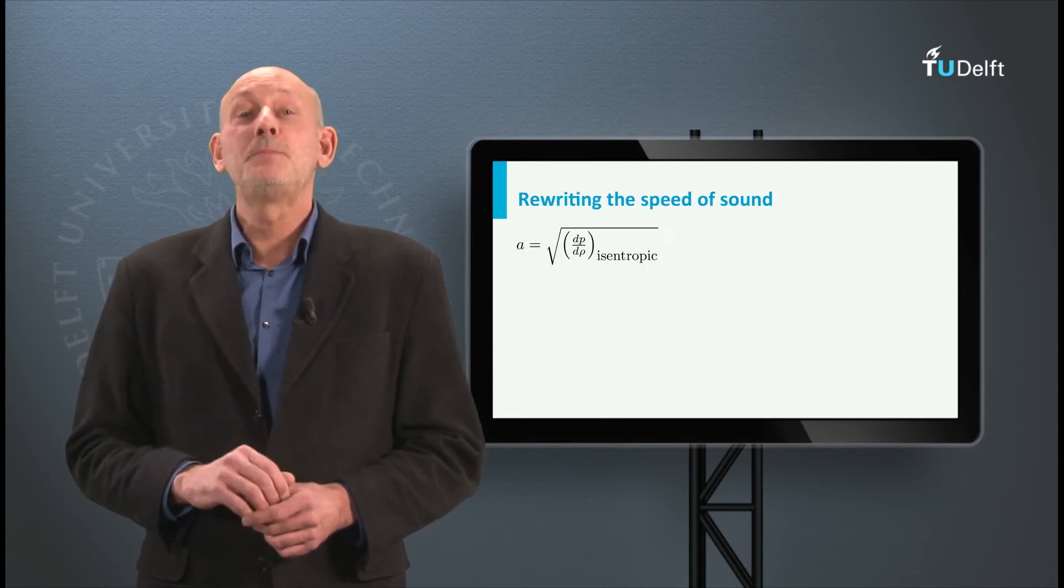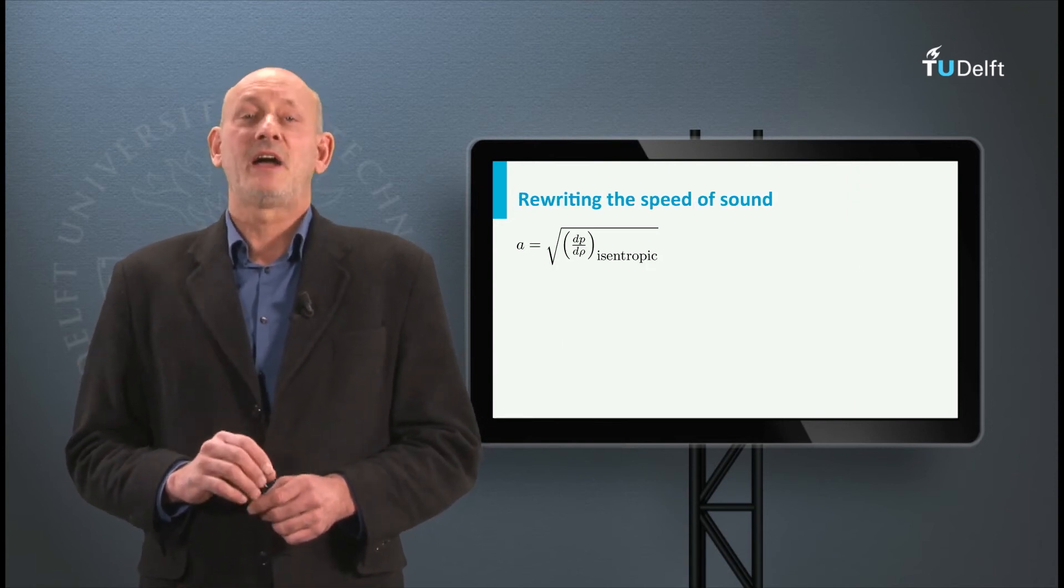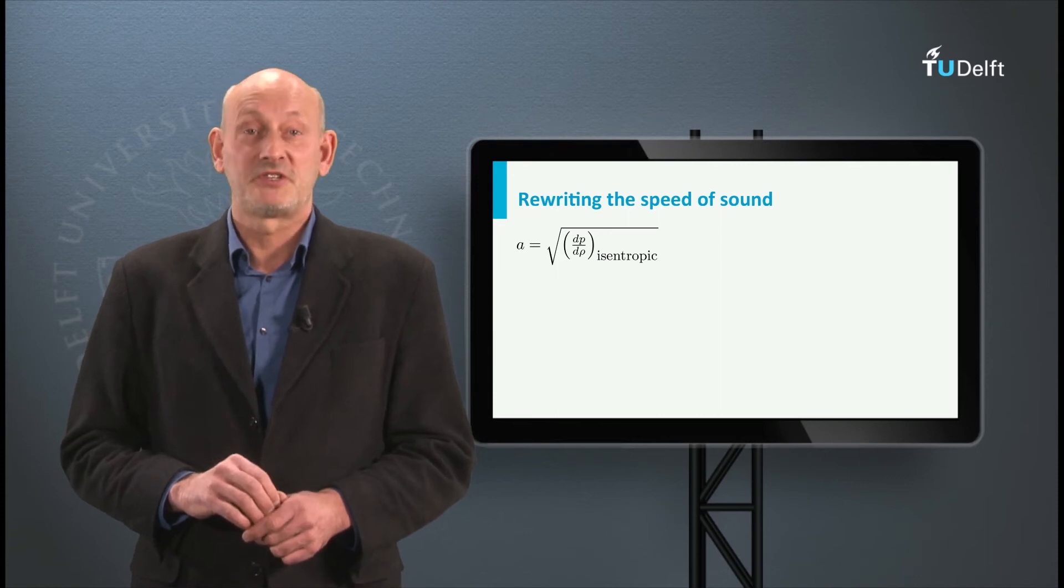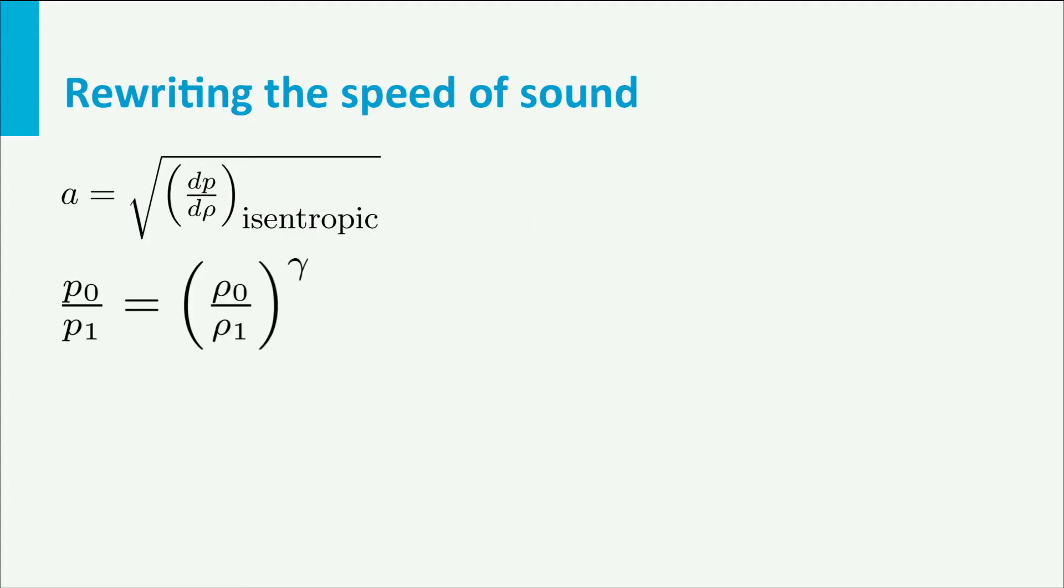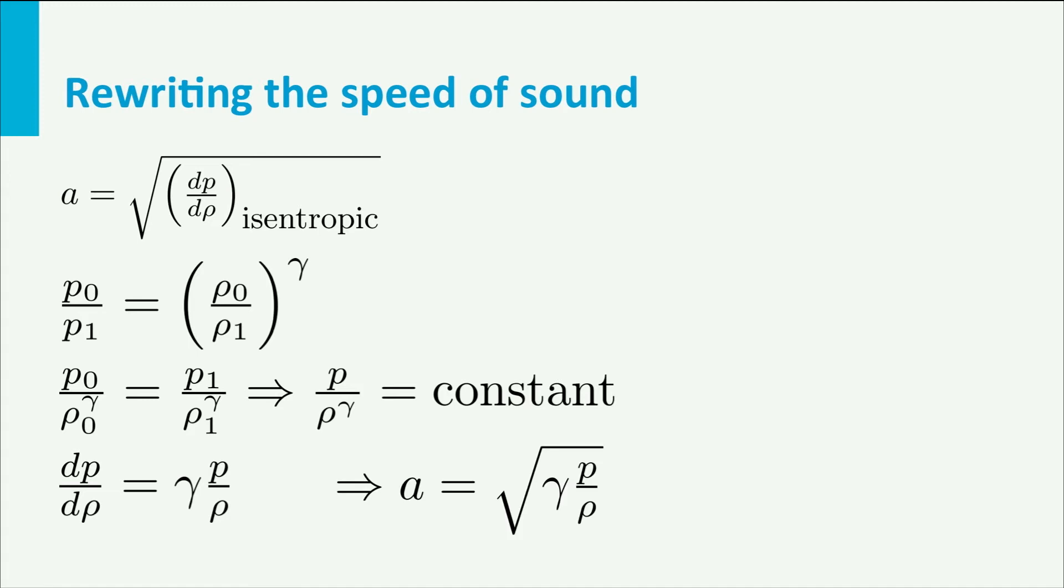The differentials dP dRho can be derived from the isentropic relation for pressure and density. This equation can also be written as p over rho to the power gamma is constant. Differentiating this we find dP over dRho is gamma times p over rho. When we substitute this in the expression for A we find A is the square root of gamma p over rho.